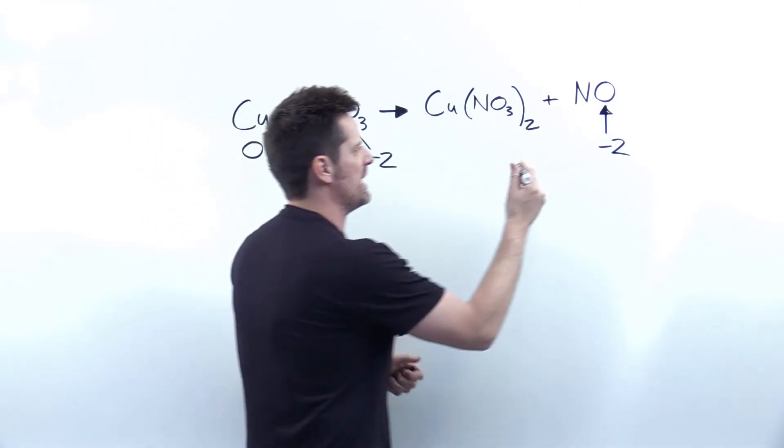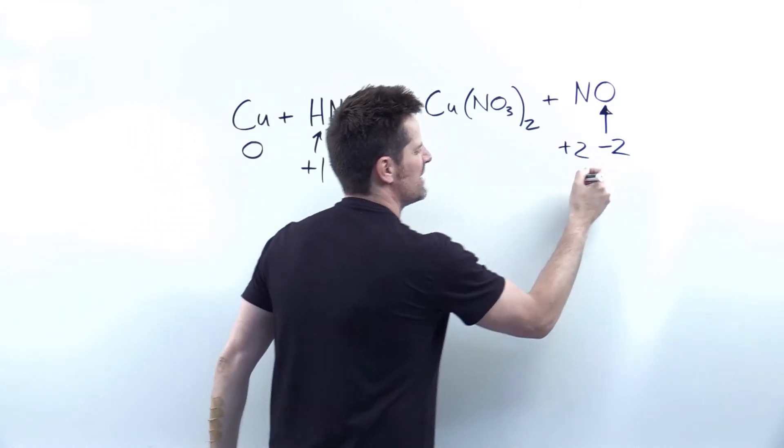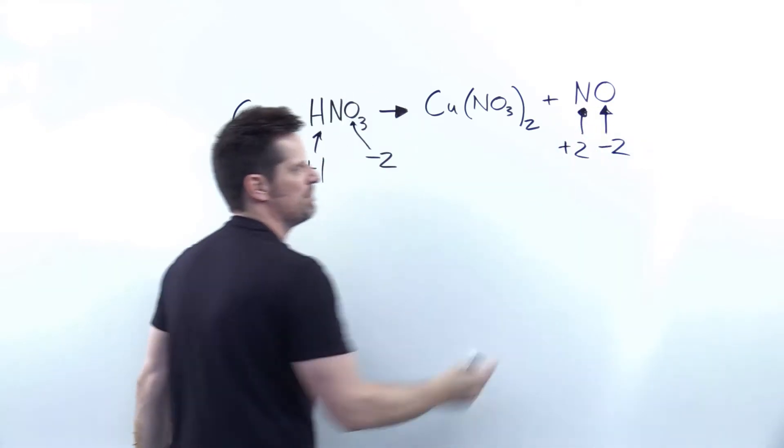Therefore, nitrogen's charge here, or oxidation number, must be plus two to countervail the effect of that minus two on the oxygen. Make sense?